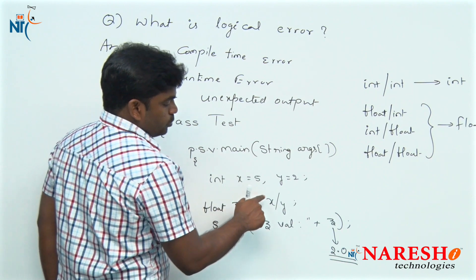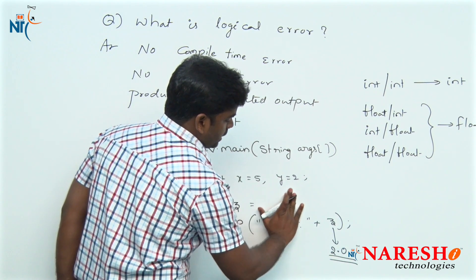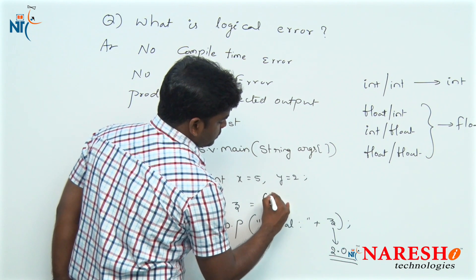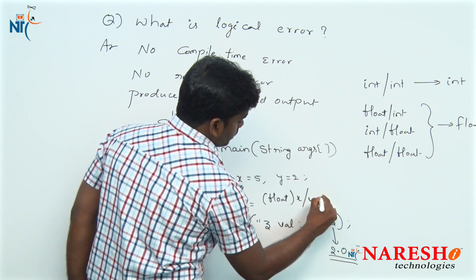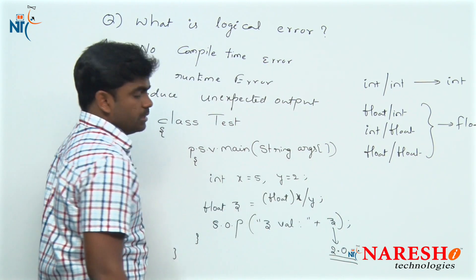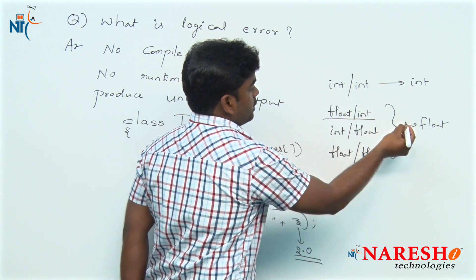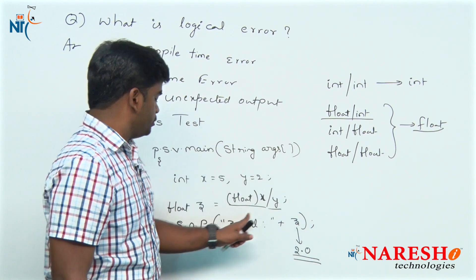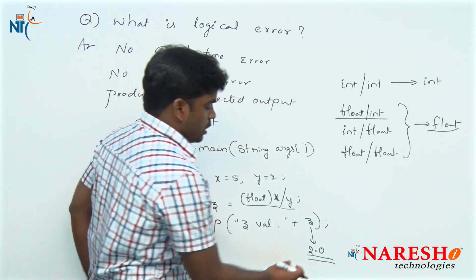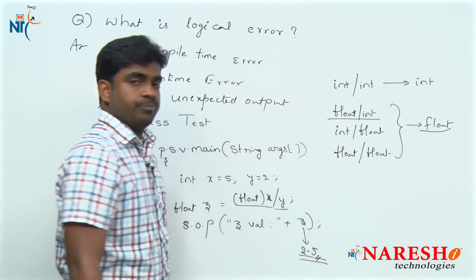We need to typecast either x into float type or y into float type. See here, x we are typecasting into float type and y as usual. Now x is a float type and y is integer. Float with integer, if you divide, result is a float only. That we are collecting into a float type variable. Now what you expected, the output will come.